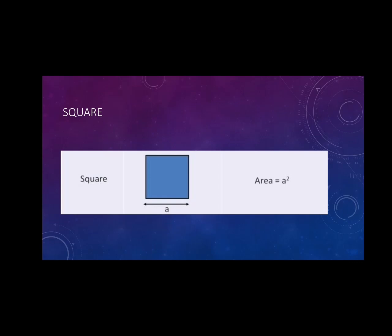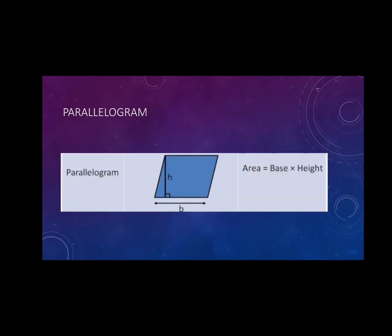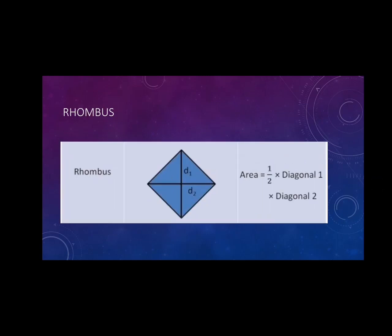The next one is parallelogram. Parallelogram area is base into height. And the perimeter is the length of its boundary. The next is rhombus. The rhombus, all the sides are equal. Therefore, the perimeter is 4 into side. And area is half into the product of the diagonals.